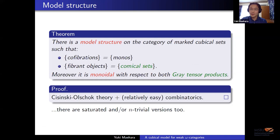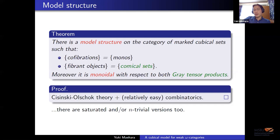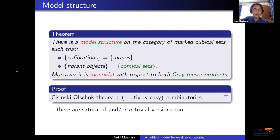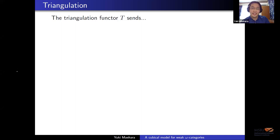The last bit of this talk is about how this cubical model relates to the simplicial model via the triangulation, which we have seen in this seminar. We have seen the unmarked version of this, but now we want a marked version of the triangulation functor. In our cubical model, the n-cube is, by definition, the n-fold lax Gray tensor product of copies of the one cube. So we just send it to the n-fold Gray tensor product of Δ¹ in the simplicial world, where this product is Dom's lax Gray tensor product.